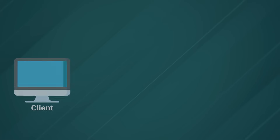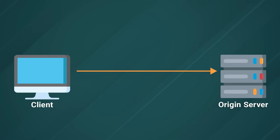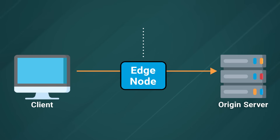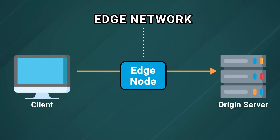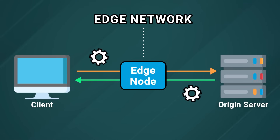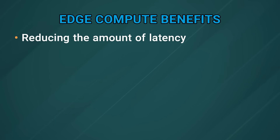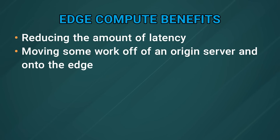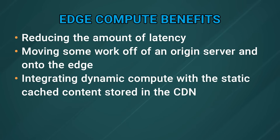The other piece of the puzzle is edge compute. The big benefit here is with an edge compute runtime, it allows you to run client requests through an edge node, which is part of a globally distributed CDN. You can modify requests from the client on their way to the origin, or modify responses from the origin on their way to the client. Edge compute can offer a lot of different benefits, including reducing the amount of latency that users experience, moving some work off of an origin server and onto the edge, and potentially integrating dynamic compute with the static cached content already stored in the CDN.